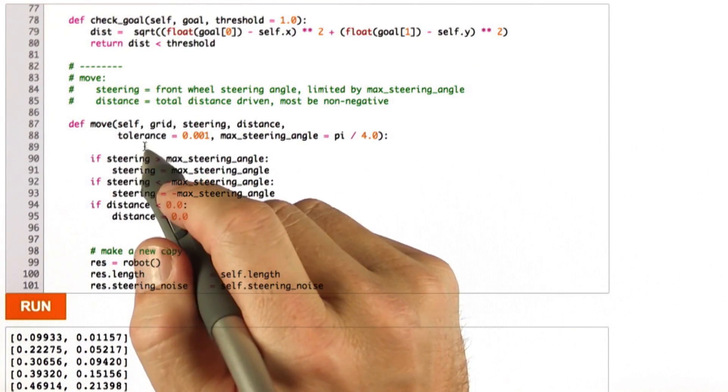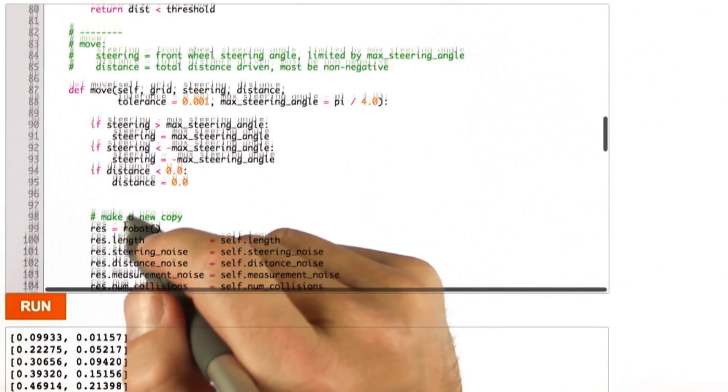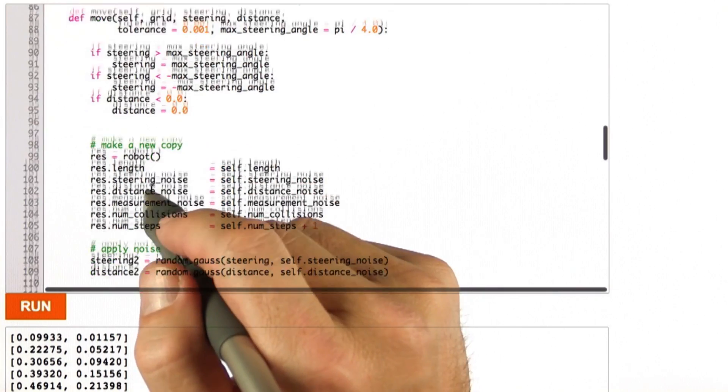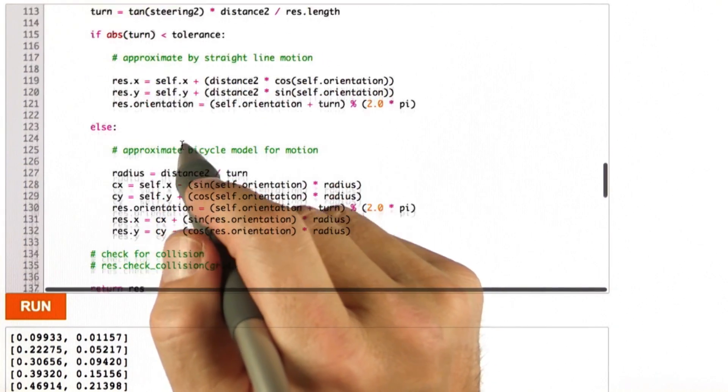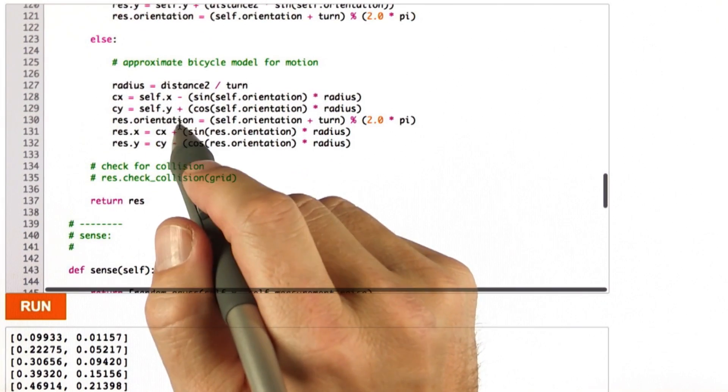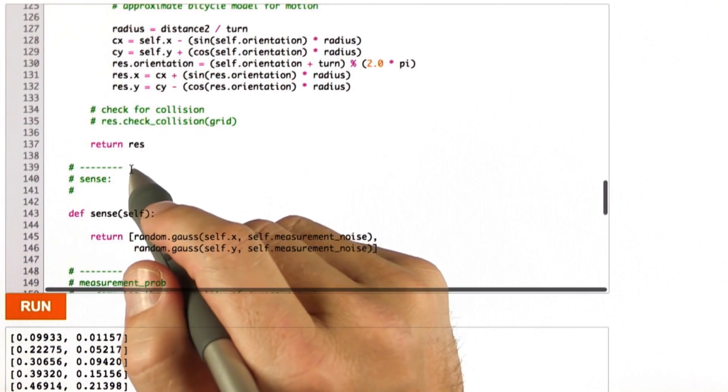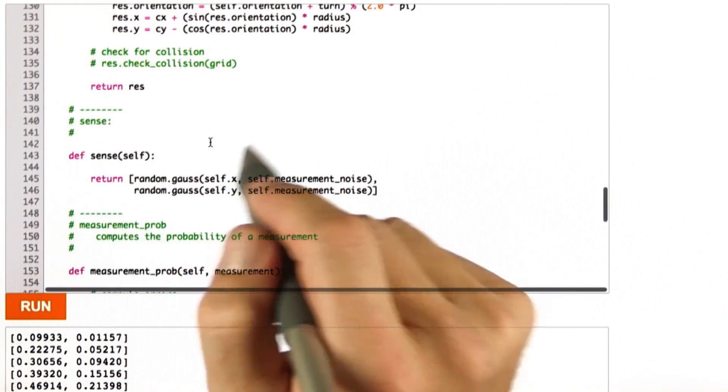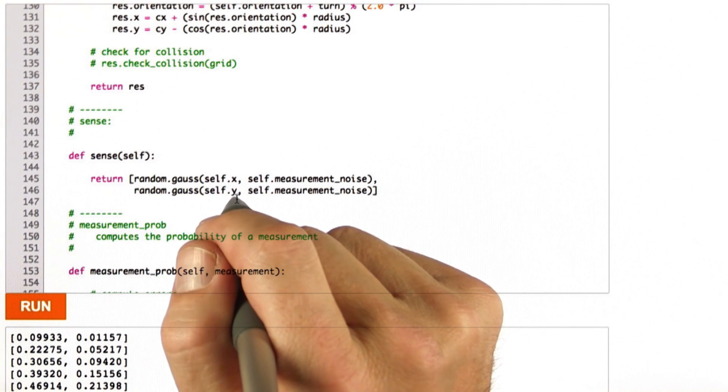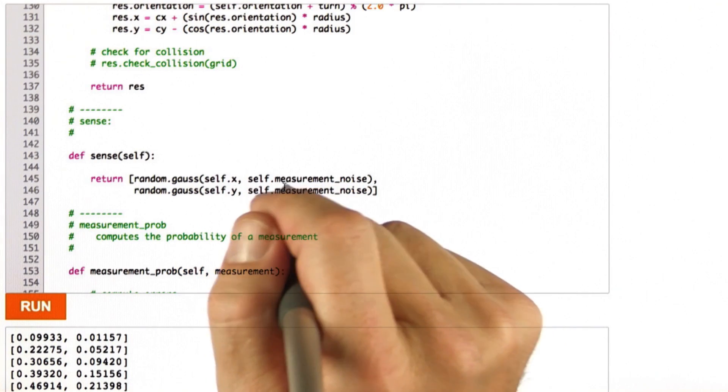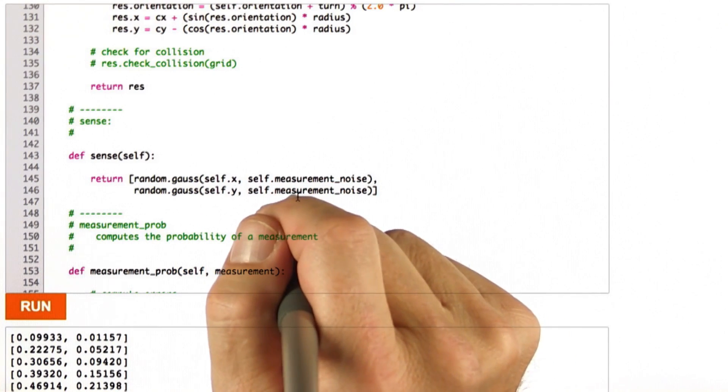The move function should be very familiar at this point. It applies noise to the motion command. It's the same code that you originally wrote. And then we have a very simple sense function, which measures the robot's x, y location, similar to a GPS on a car, but with substantial measurement noise.